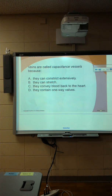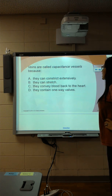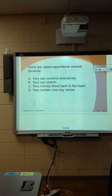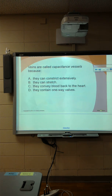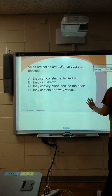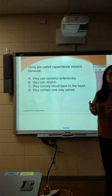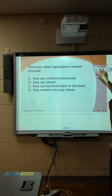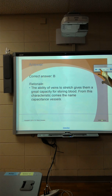Veins are called capacitance vessels — because they can constrict, they can stretch, they're very elastic, and they convey blood back to the heart. They also have one-way valves. Capacitance means capacity — something to hold something. So it means they can stretch. They can really do all those things.